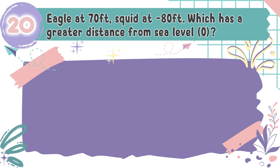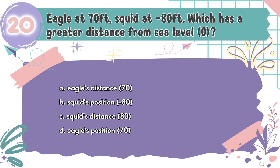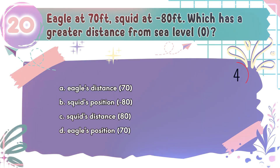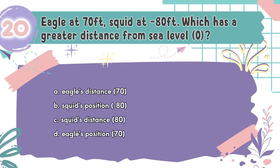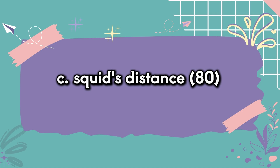Question number 20: An eagle is at 70 feet and a squid is at negative 80 feet — which has a greater distance from sea level (0)? The choices are A. Eagle's distance 70, B. Squid's position negative 80, C. Squid's distance 80, D. Eagle's position 70. The correct answer is C. Squid's distance 80. The eagle's distance is the absolute value of 70, which is 70. The squid's distance is the absolute value of negative 80, which is 80 — the squid's distance is greater.